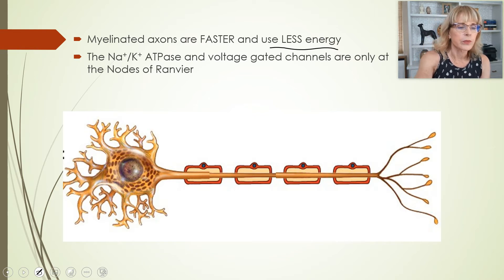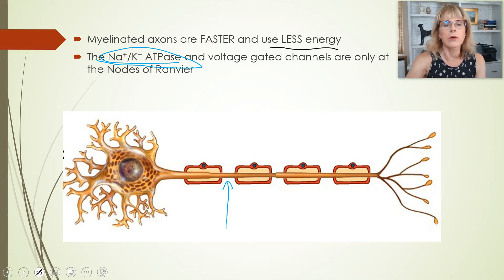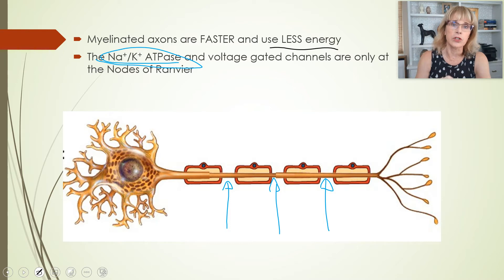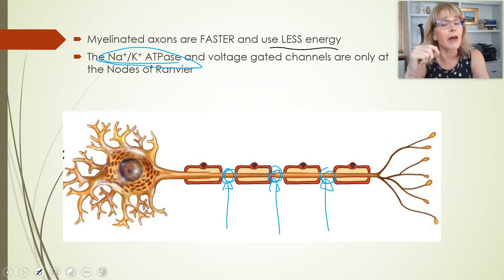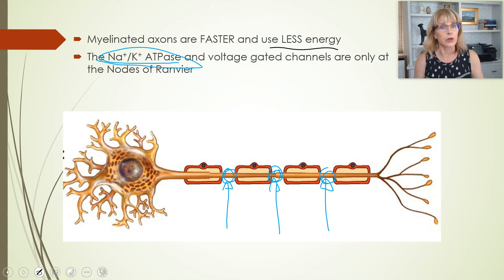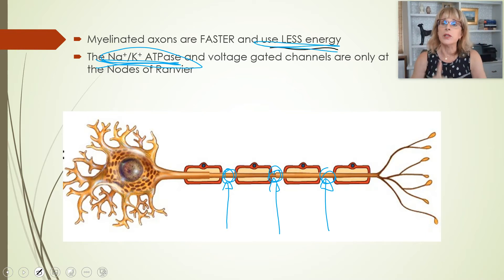The sodium-potassium pumps and potassium leakage channels are only found at the nodes of Ranvier. That's number one, and this is the reason that myelinated axons use less energy. The depolarization of the axon membrane only happens at the nodes of Ranvier, so it's only there that we need to use the sodium-potassium pumps and potassium leakage channels to restore the resting membrane potential. That is why it uses less energy.